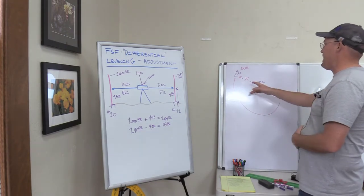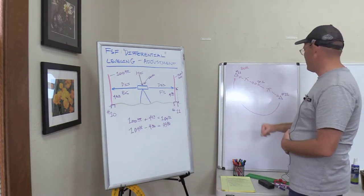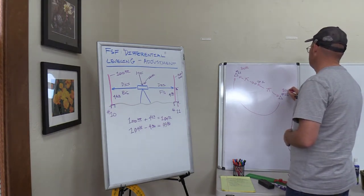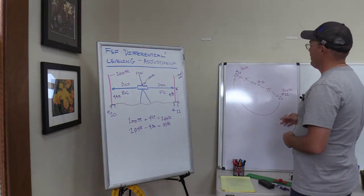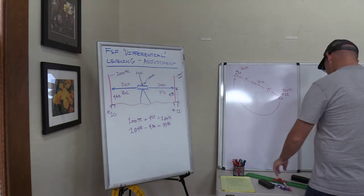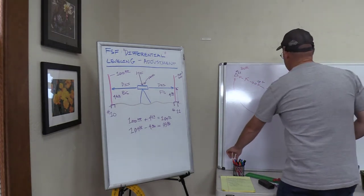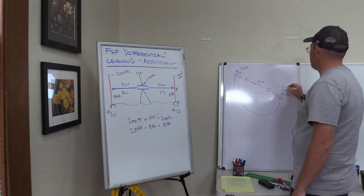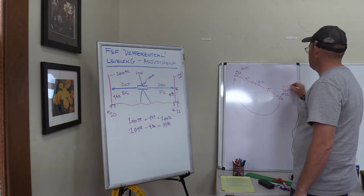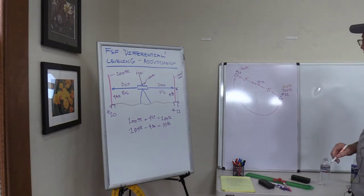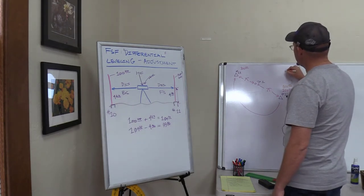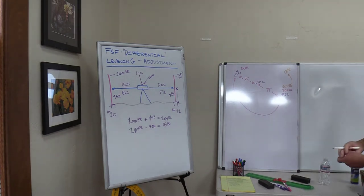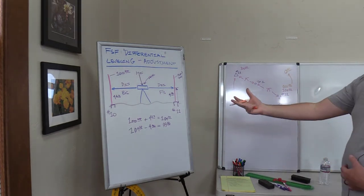In the first scenario, you've got a published elevation at point 11 and a published elevation at point 12. You set up, do your level run, do your calculations, and the elevation you get at number 12 is not exactly the published elevation — it's going to be slightly different. Let's say it's 102.02, so 0.02 higher. In that case, we have a closure error at number 12 of 0.02. One way to calculate a closure error is to compare a published elevation with your measured elevation.